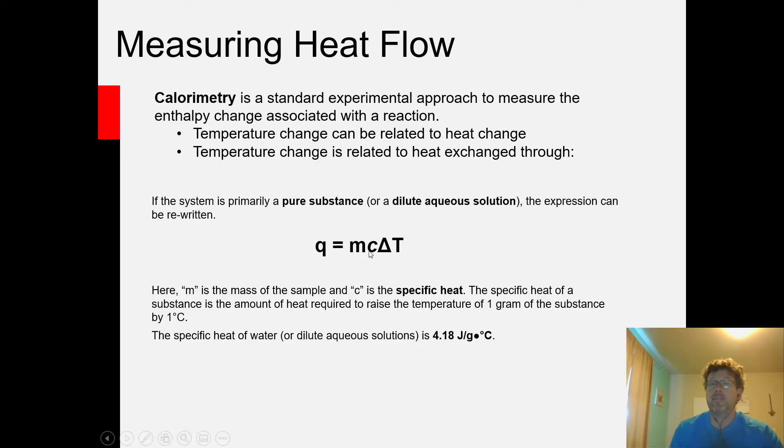You can look up the specific heat of whatever goes into the calorimeter in table 9.1, and with the calorimeter you can measure the temperature change associated with your process. If you know mass, specific heat, and temperature change, you can calculate heat flow using the calorimetry equation.